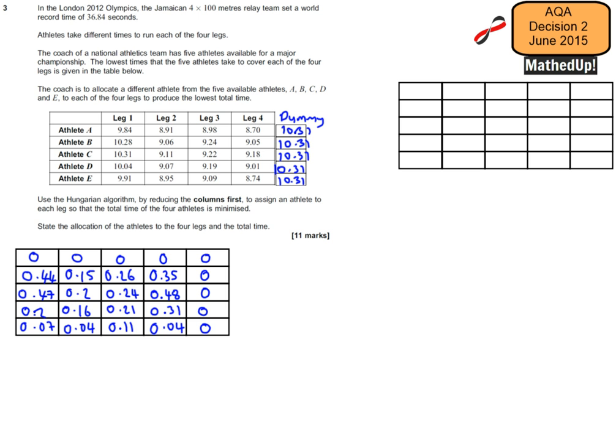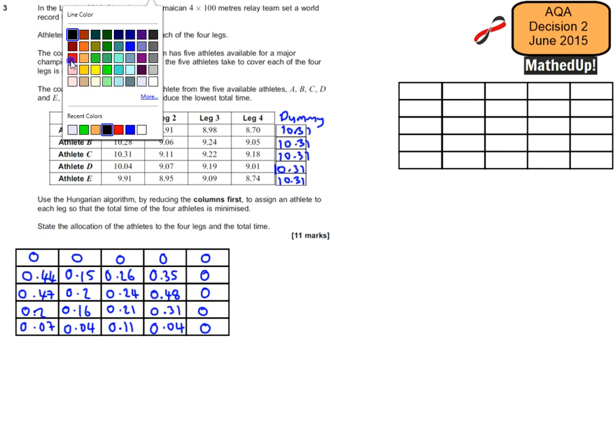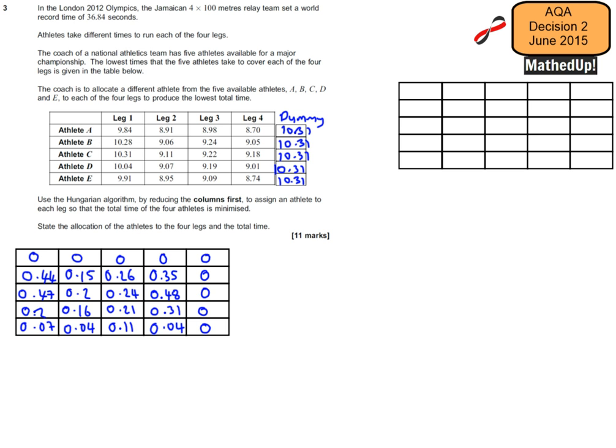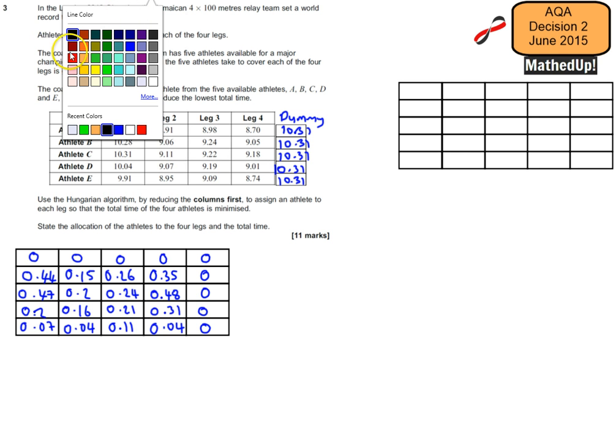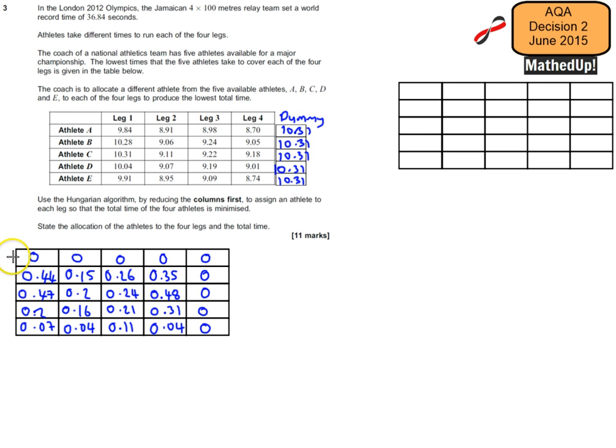So what we now do, according to our algorithm, is we want to draw the minimum number of lines that we can draw that covers all of the 0s. So I can draw a line across like that and down like this. That's the minimum number of lines I can draw that covers all the 0s. Now I've had to draw two lines. And if I had to draw five lines, that means that I've reached my optimal solution. So at the moment I can only draw two lines. So I'm going to carry on.